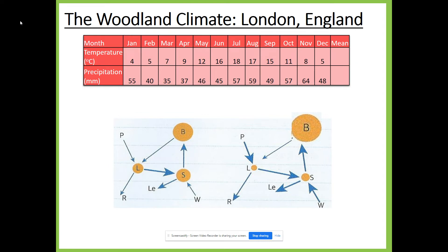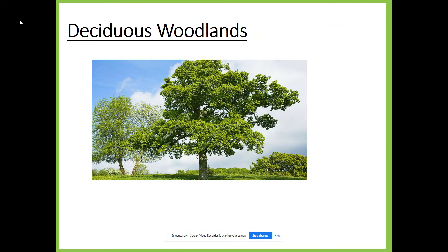Rainforests and woodlands are very different biomes, and that is also reflected in the plants and animals found there. You need to know some key plants and animals found in deciduous woodlands and be able to explain the adaptations each one has to help it survive. Here we can see an oak tree — whenever you are asked about deciduous woodland adaptations, oak trees are one of the first species to mention. The first adaptation you can see in this picture: the branches spread out horizontally, meaning the leaves can capture as much sunlight as possible, which helps the tree with photosynthesis. The leaves themselves are broad and soft, which maximises the amount of energy they receive from the sun.